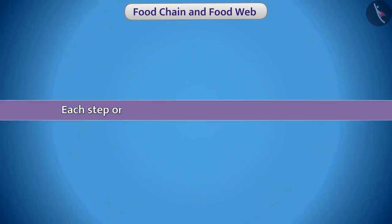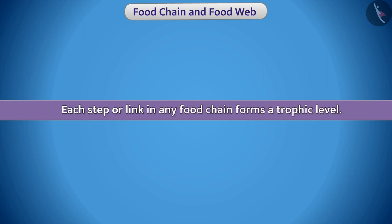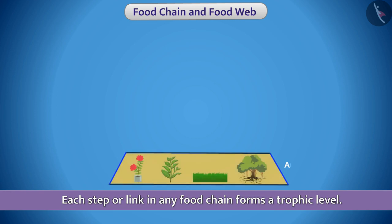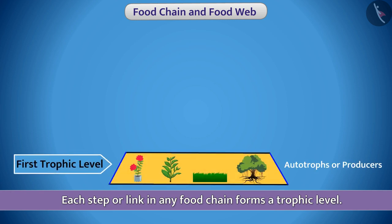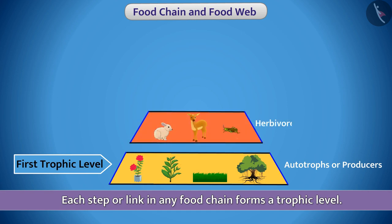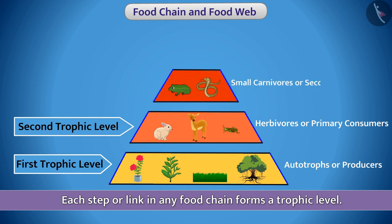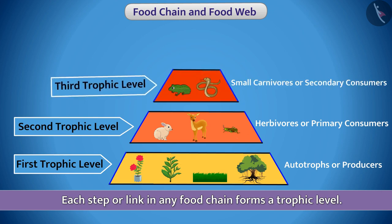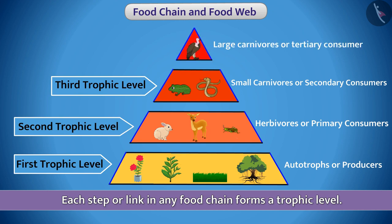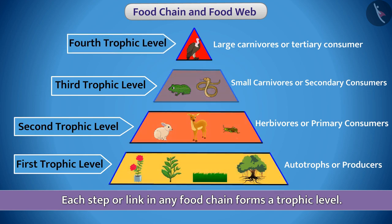Each step or link in a food chain forms a trophic level. Autotrophs or producers form the first trophic level. Herbivores or primary consumers form the second trophic level. Small carnivores or secondary consumers form the third trophic level, and large carnivores or tertiary consumers form the fourth trophic level.